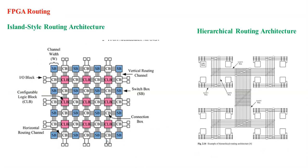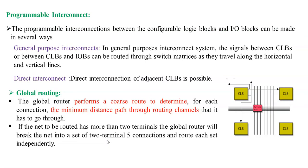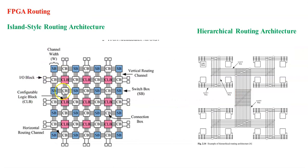Next we go to the routing method. Routing is the interconnection between the corresponding logic block cells as well as the IO cells. The programmable interconnect connects the configurable logic block as well as IO block in various ways. One is general purpose interconnect; another is direct interconnect. In general purpose interconnect, signals between CLBs and between CLBs and IOBs are routed through the switch matrix and travel along horizontal as well as vertical lines, using vertical and horizontal routing for the interconnection of CLBs.